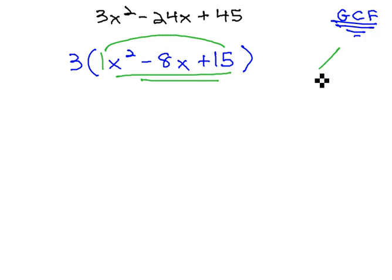AC multiplies 1 times 15, giving us 15, and adding to -8. 15 we know is 3 times 5, but that adds to positive 8. However, if they're both negative, then they would still multiply to a positive 15, and now they will also add to the -8 we want.